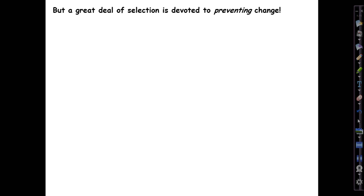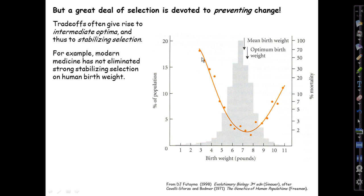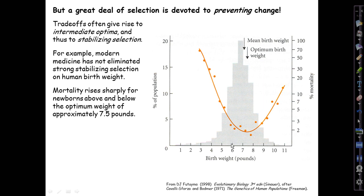A great deal of selection, actually, is devoted to preventing change, and this in my view isn't studied nearly enough. Trade-offs often give rise to intermediate optima and thereby to stabilizing selection. Here's a really important place where that happens in our species: birth weight of newborns. All the tremendous advances that medicine has made in recent decades and centuries still haven't eliminated what is, to this day, strong stabilizing selection on human birth weight.